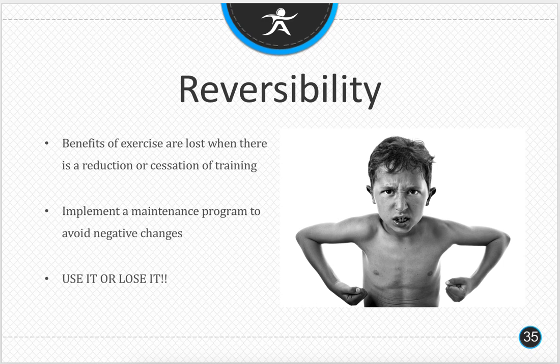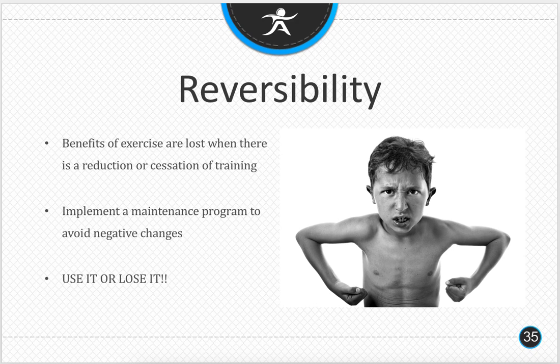The principle of reversibility is basically: if you don't use it, you're going to lose it. Once you stop exercising, the benefits of exercise will reduce or completely stop. They did a study with rats where they injected them with a neurotoxin — if the rats were exercising every day, they actually didn't develop Parkinson's disease. But the very day they stopped is when Parkinson's disease started to take effect in the brain. We have to use exercise as medicine in the same way.